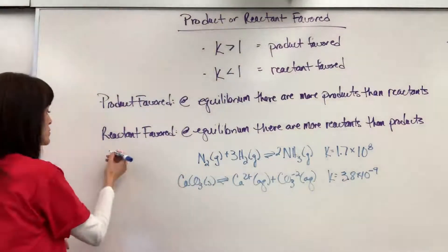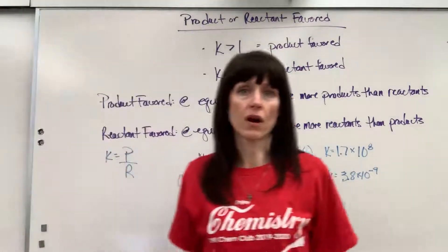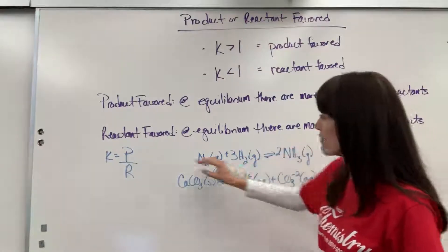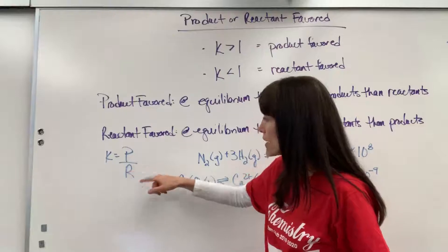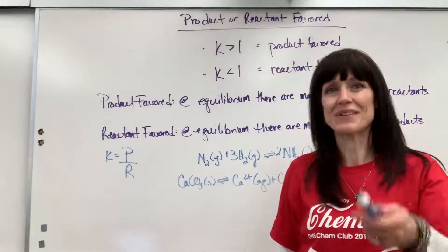Now look at this mathematically. You'll be able to figure it out. You'll recall that when we do K, it's always products over reactants. So I'm going to do P over R for products over reactants. If I have more products, so I have a high concentration of products, small concentration of reactants, a big number divided by a small number gives you a number greater than one.